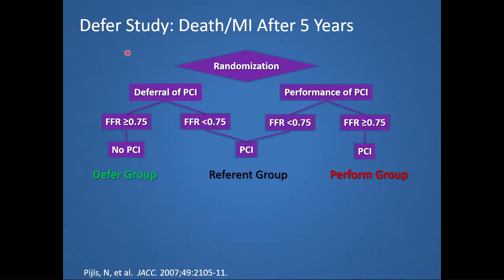Let's evaluate the DEFER study. The obvious question is how do patients do when we defer PCI based on FFR being greater than 0.8? At the time of the DEFER study, published in 2007, a cutoff of 0.75 was being used for FFR. Patients in this study had coronary stenosis of 50% or greater with a vessel diameter of at least 2.5 millimeters but oddly had no documented ischemia. These 325 patients were randomized to deferral of PCI or performance of PCI. In the deferral arm, if FFR was greater than 0.75, PCI was not performed; if FFR was less than 0.75, PCI was performed. In the performance arm, PCI was performed even if FFR was greater than 0.75.